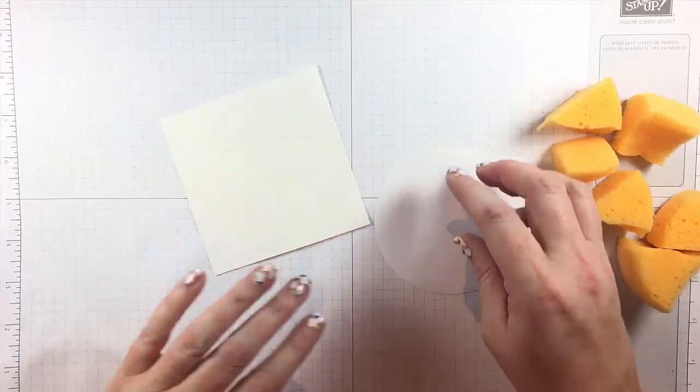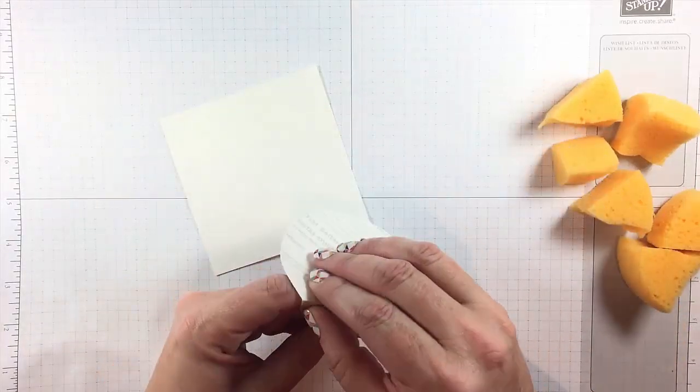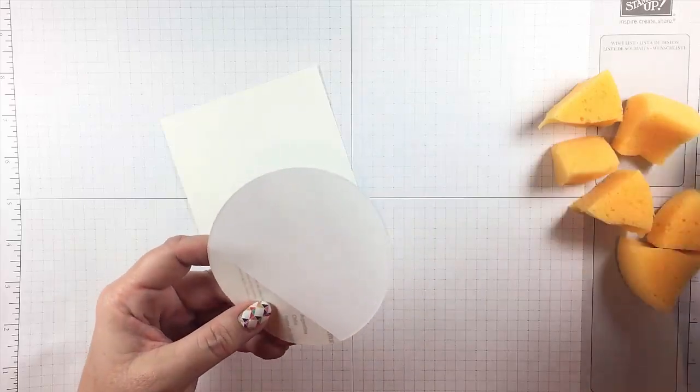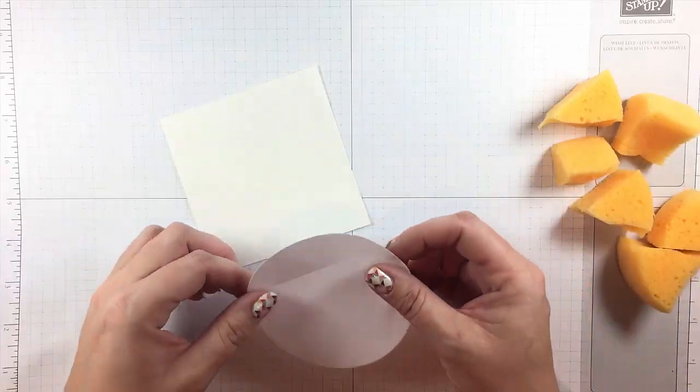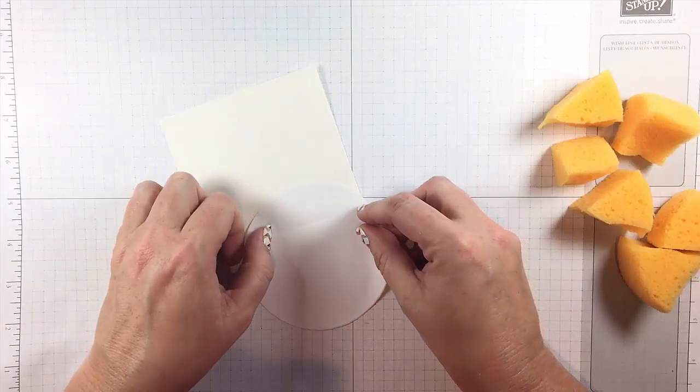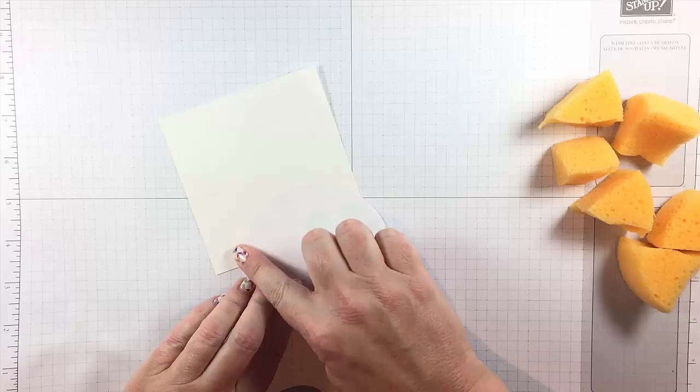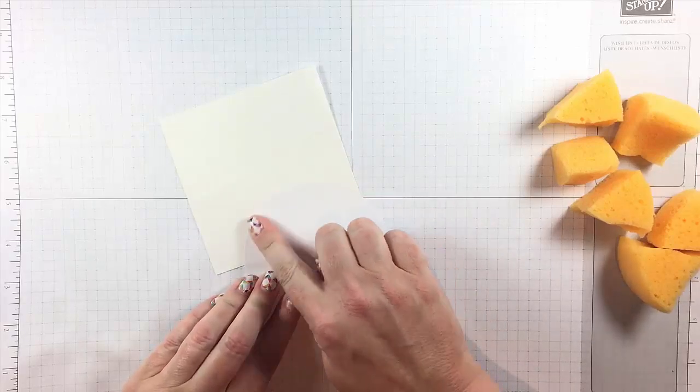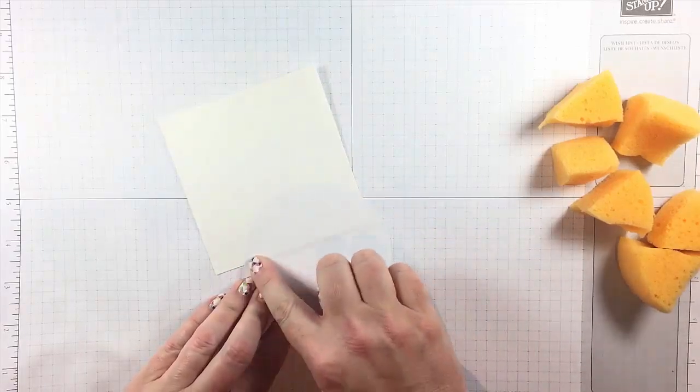Just a piece of removable label paper from Avery. This is a real inexpensive way to mask and I'm putting this circle down so it sort of looks like the couple that I embossed from this stamp set are sitting on the edge of the earth.